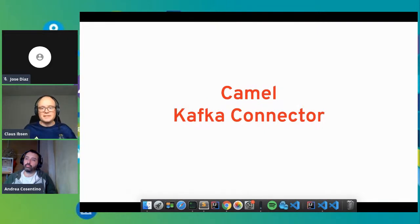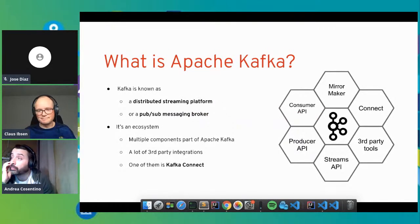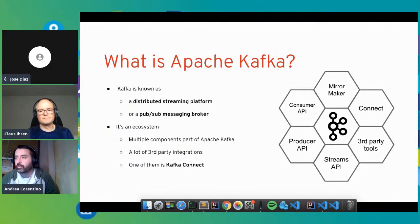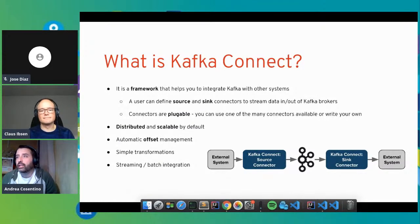Andrea will now talk about the Camel Kafka Connector product. Camel Kafka Connector is the newest project in the Camel ecosystem, based on Kafka — a distributed streaming platform or PubSub messaging broker. In the Camel Kafka Connector, we focus on the Kafka Connect framework. Kafka Connect lets you integrate Kafka with external systems by defining source and sink connectors to stream data in and out of the Kafka broker. Those connectors are pluggable — you can write your own or use existing ones. Kafka Connect features include being distributed and scalable by default, with automatic offset management.